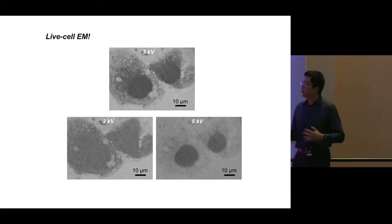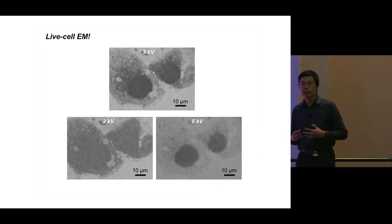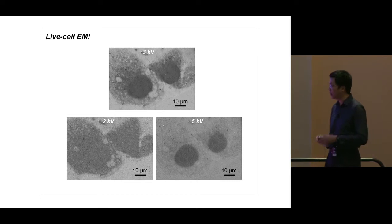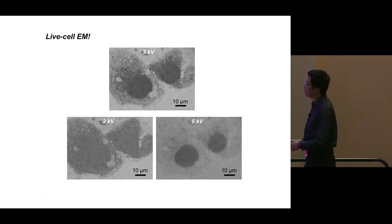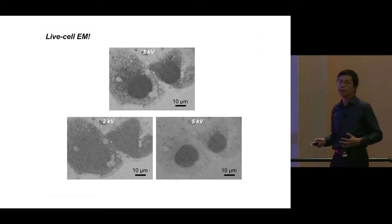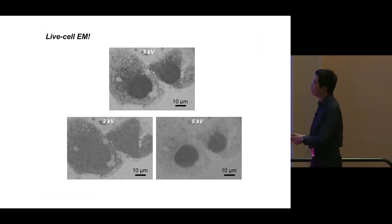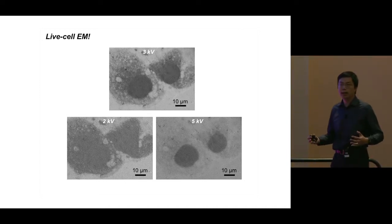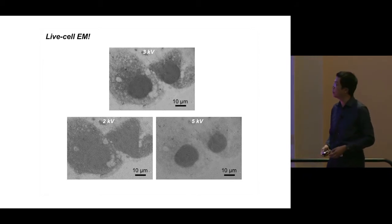We recently showed we can even do live cell electron microscopy using this method, just by covering cells under graphene. At different voltages there are no structural changes to the cell during electron microscopy, and at three kilovolts you can start to look at some internal structure of the cell. We still need to improve the contrast for this method in future studies.